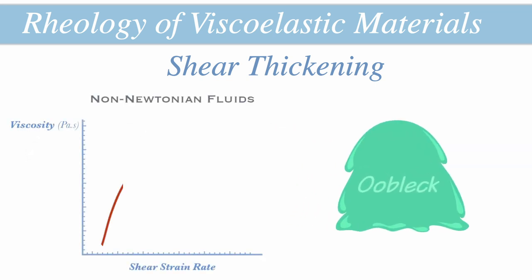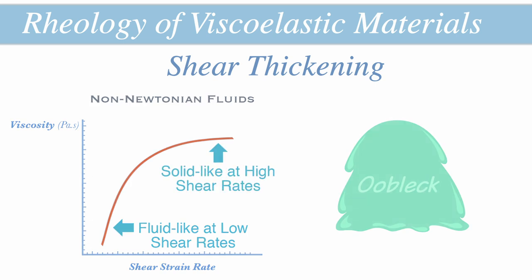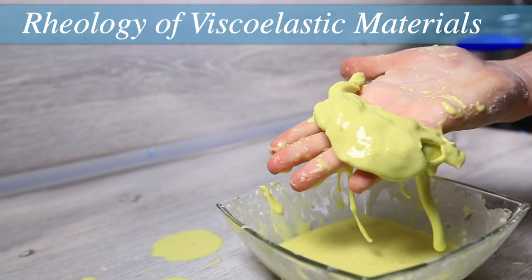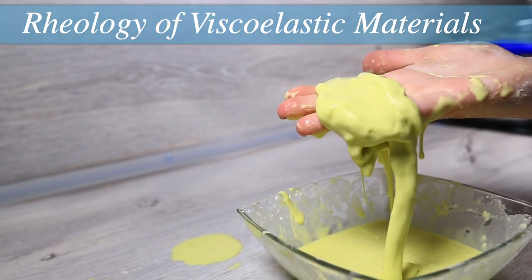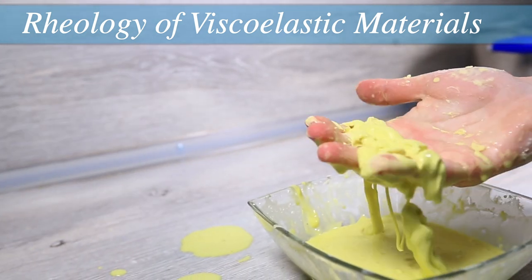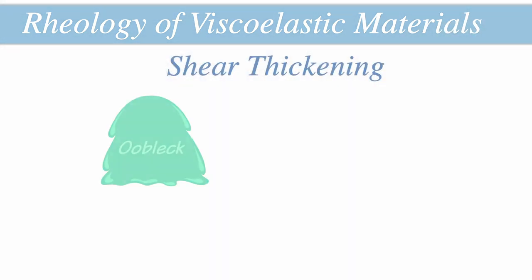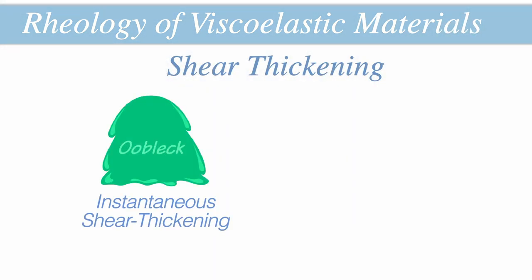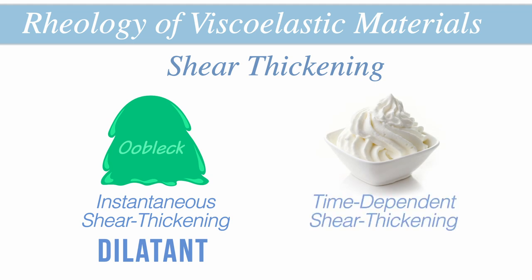At rest, oobleck behaves like a liquid because its viscosity is low when little movement is occurring. However, if a sudden increase in pressure is applied by squeezing oobleck, the viscosity of the colloid increases significantly. The result is a solution that flows easily like a fluid at rest but suddenly hardens and behaves like a solid when increased pressure is applied — it can act both like a solid and a liquid under the right circumstances. Substances like oobleck that show an instantaneous increase in viscosity with an increase in shear strain rate are known as dilatants. Other mixtures like whipping cream only show shear thickening gradually over time and are instead known as rheopectic.